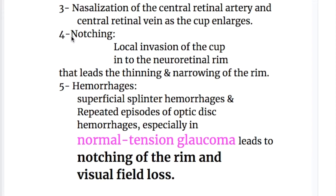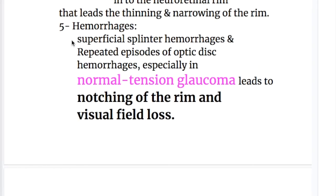Number four, notching — local invasion of the cup into the neuroretinal rim — leads to thinning and narrowing of the rim. Number five, hemorrhages: superficial splinter hemorrhages and repeated episodes of optic disc hemorrhages, especially in normal tension glaucoma, lead to notching of the rim and visual field loss.